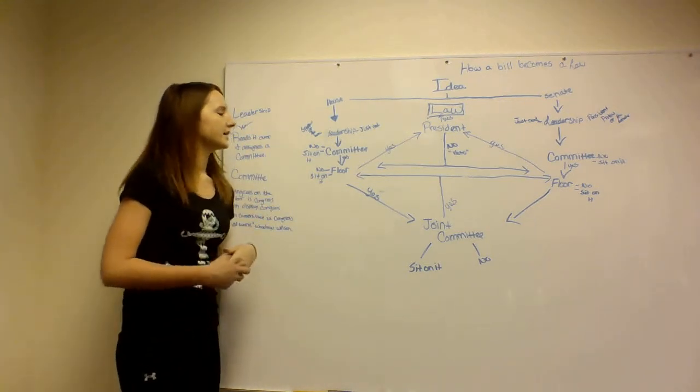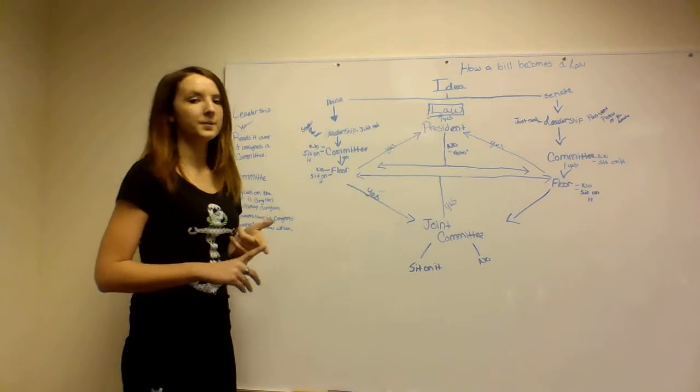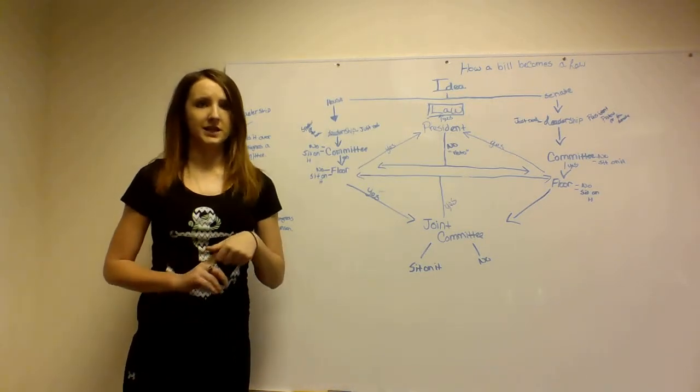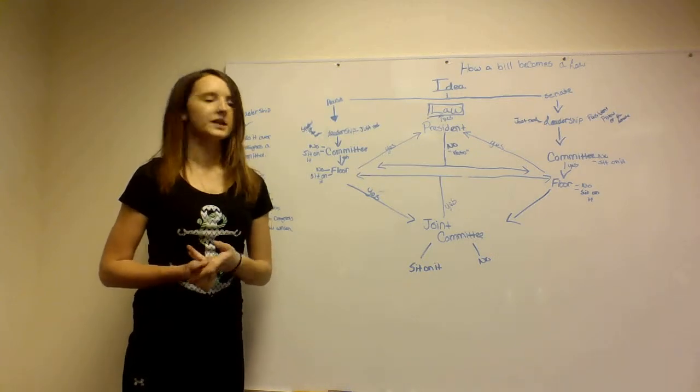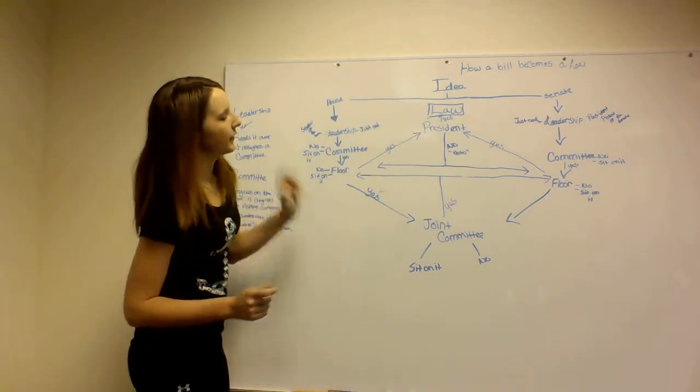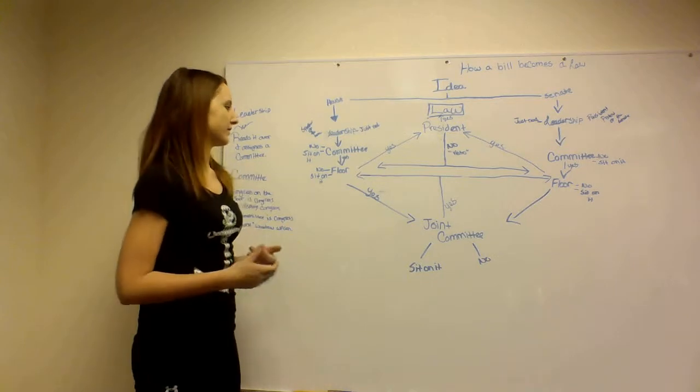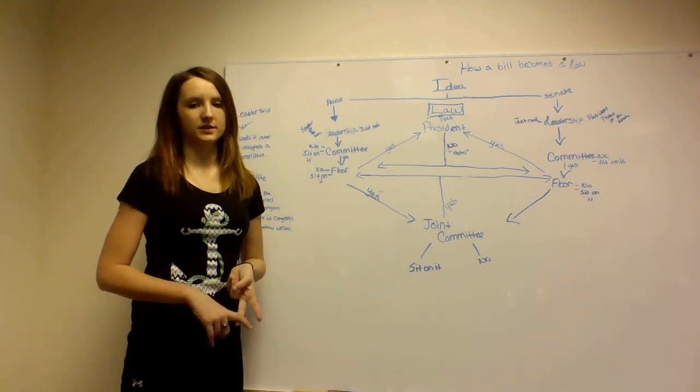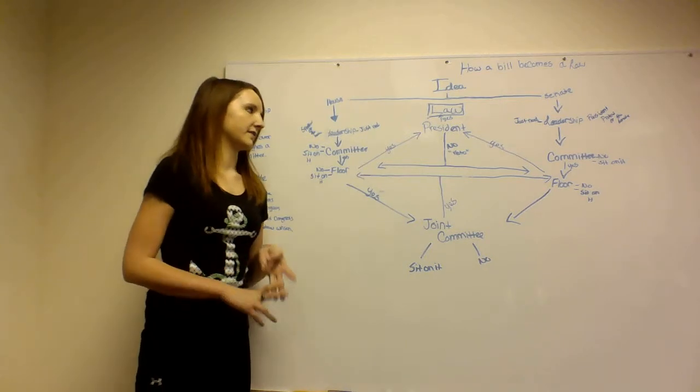Once it gets to the committee, the committee can vote no, they can sit on it, which is wait and it will end, or they could vote yes. And if they vote yes, then it goes down to the floor. And the floor can vote no, they can sit on it or wait, or they can vote yes.